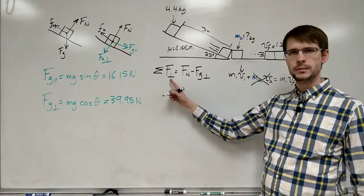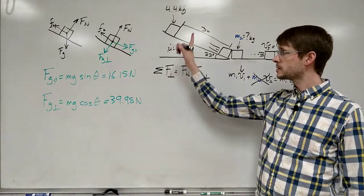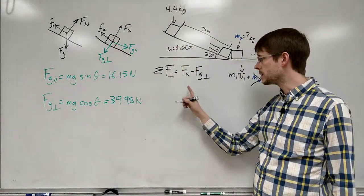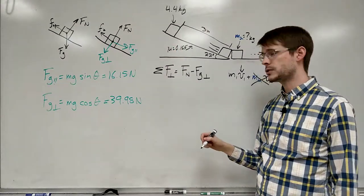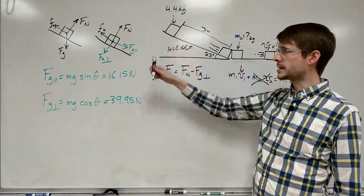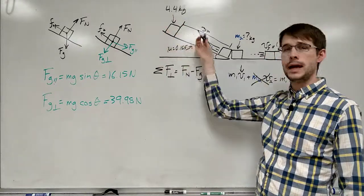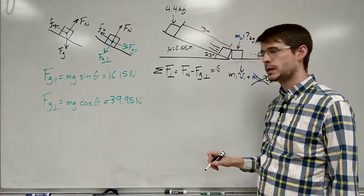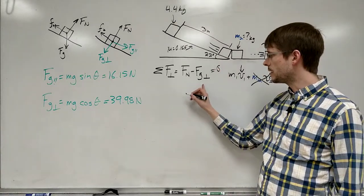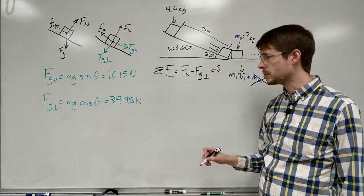In the perpendicular direction, we've got that the forces is the normal force pointing upwards in the perpendicular direction minus the gravity force pointing downwards in the perpendicular direction. And since the block is not accelerating in this direction, it's only accelerating down the hill, this is going to be equal to zero.